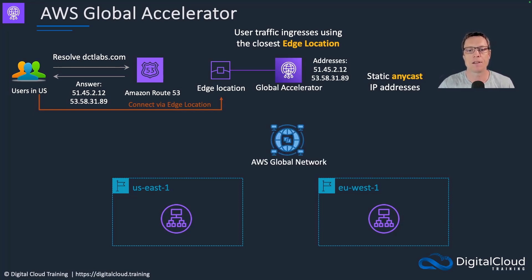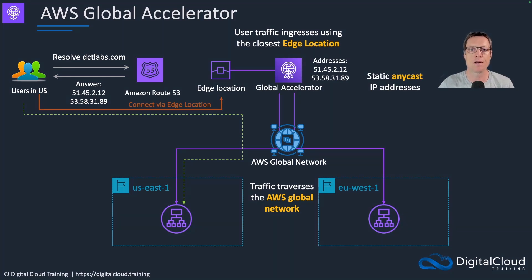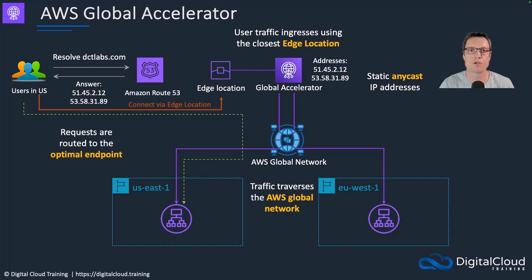Global Accelerator utilizes the global network to forward connections to the relevant regions. The green line indicates where the traffic has actually gone; the purple line represents the AWS global network as potential paths. The users have been directed to US-East-1 because they are in the US and it is closest to them — routing to the most optimal, healthy endpoint for the best performance.